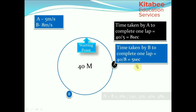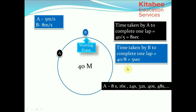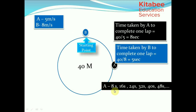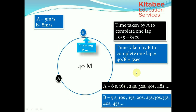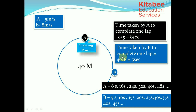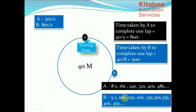A completes one lap in 8 seconds, so in every multiple of 8 seconds A would be at the starting point — after 8 seconds, 16 seconds, 24 seconds and so on. Similarly, B reaches the starting point at every multiple of 5 seconds, so B would be at the initial point at 5 seconds, 10 seconds, 15 seconds and so on.